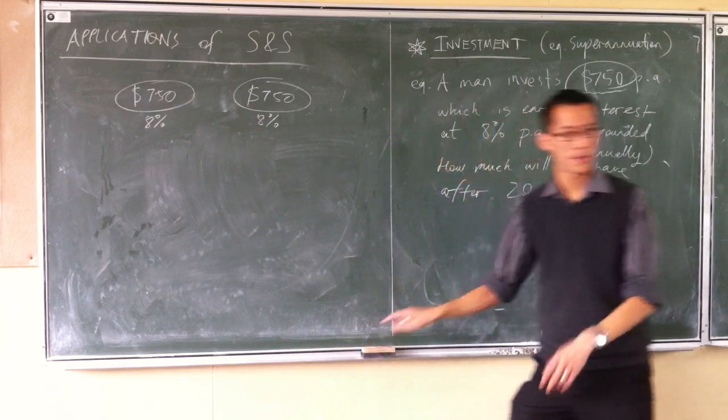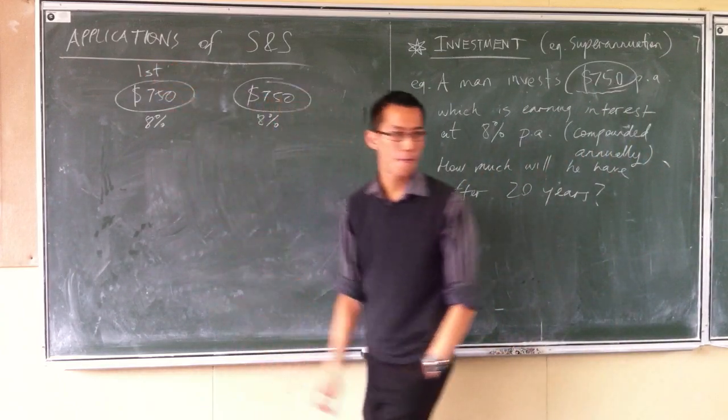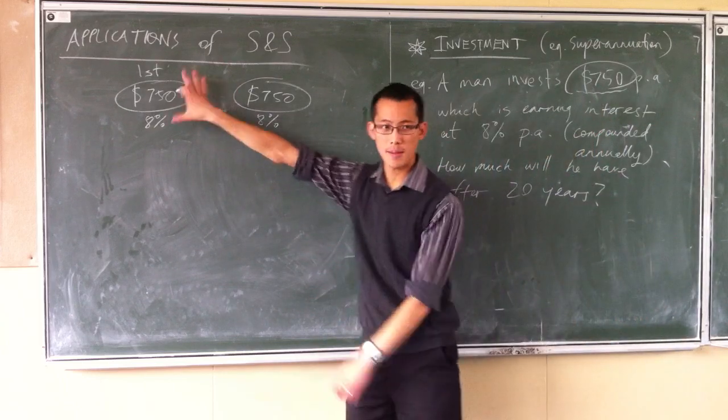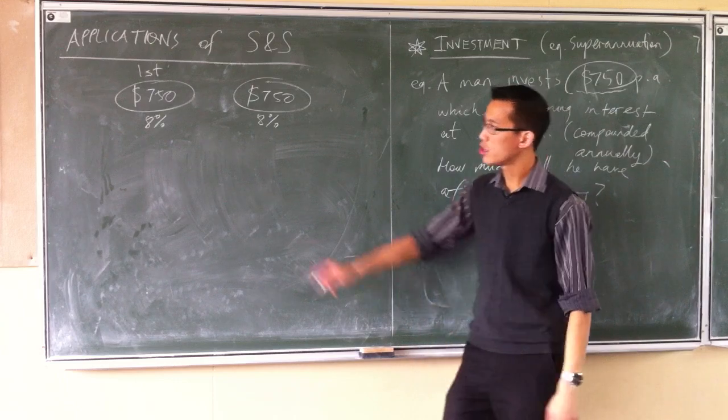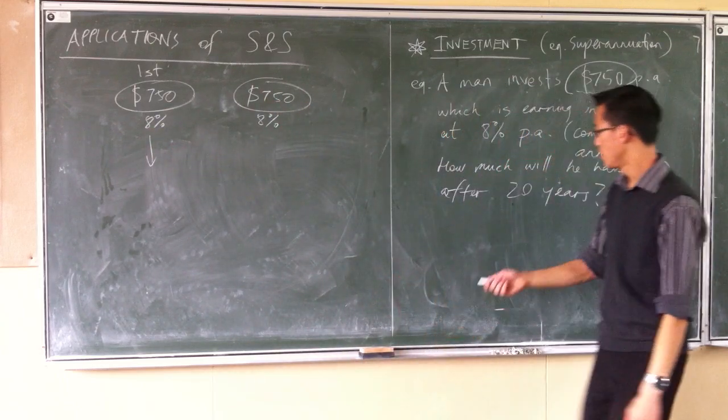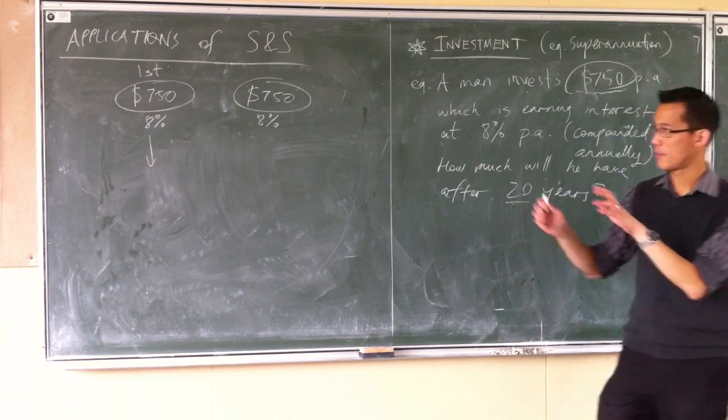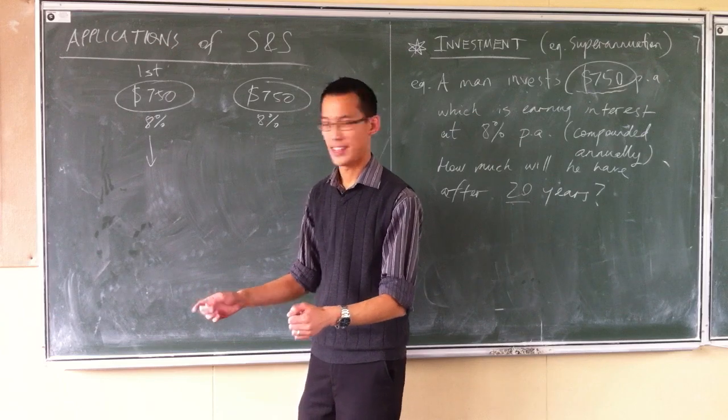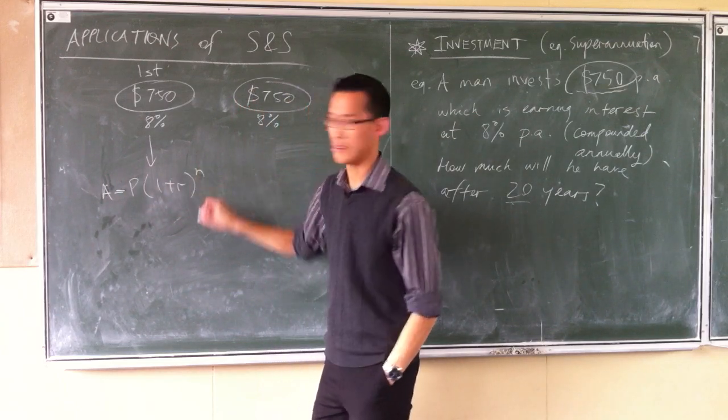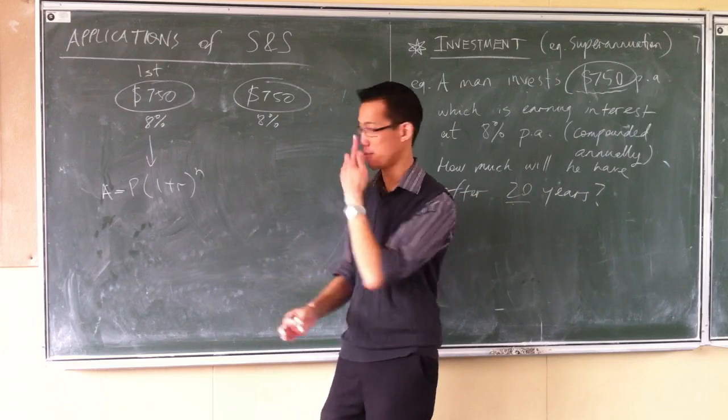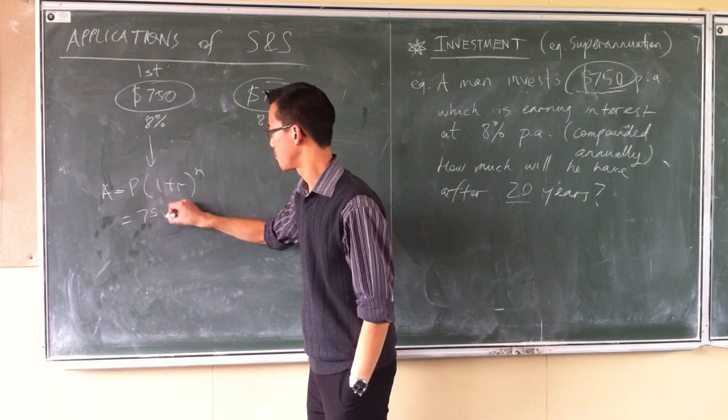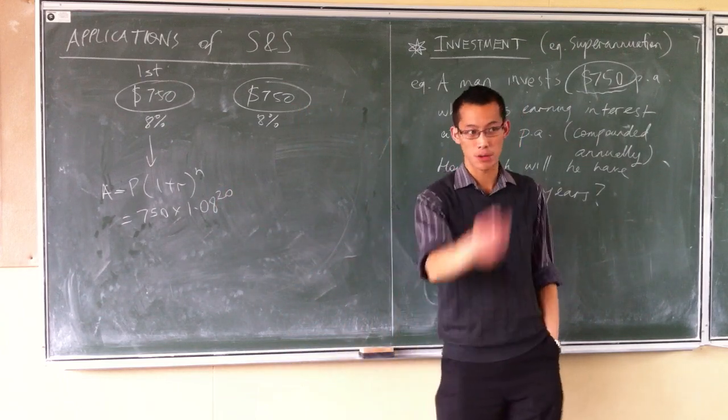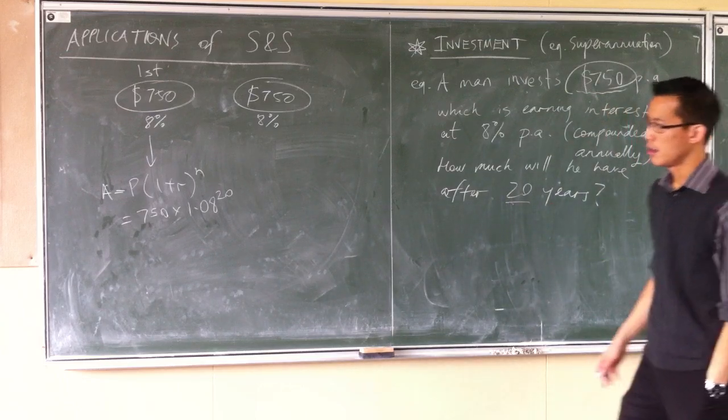Coming back to these different lots, let's consider the first amount, that first $750 that he sticks in there. Based on our compound interest formula, we should know, just thinking about this one, forgetting about all the other $750 investments, we should be able to work out how much that $750 is worth after 20 years. Because that's the situation we started with - it's $750 and I just put it there and I don't touch it. What's it worth after 20 years? A is equal to the principal times - there's our compound interest formula. So I'm just going to stick my numbers in: $750 times 1.08 to the power of 20, because it's in there for 20 years.